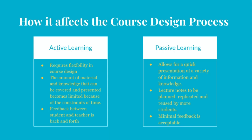Now let's look at how each affects the course design process. Active learning requires flexibility in course design. The amount of material and knowledge that can be covered becomes limited because of time constraints, and feedback between student and teacher is back and forth. Passive learning allows for a quick presentation of a variety of information and knowledge. Lecture notes can be planned, replicated, and reused by more students, and minimal feedback is acceptable.